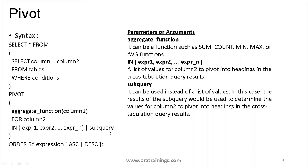The subquery functionality wasn't working, so you can ignore it, but the aggregate function works perfectly — you can apply sum, count, min, max. As per the IN clause information: it is a list of values for column two to pivot into headings. Whatever expression you mention in the IN clause becomes the column heading when you run the pivot query. The value comes from the aggregate function, and the column name comes from the IN clause. This is the high-level syntax of pivot; we'll see samples to understand it better.